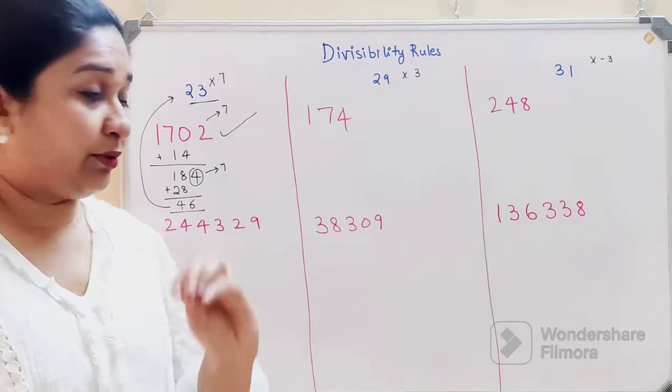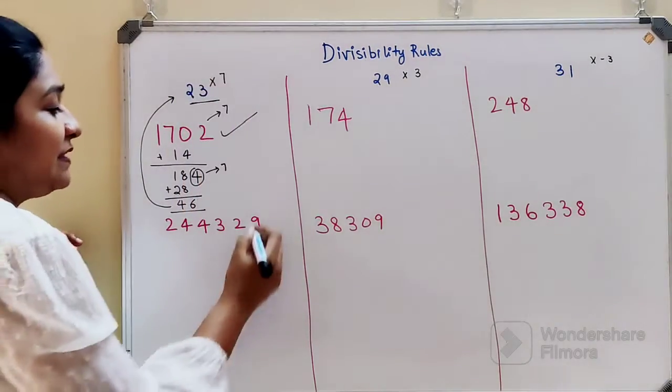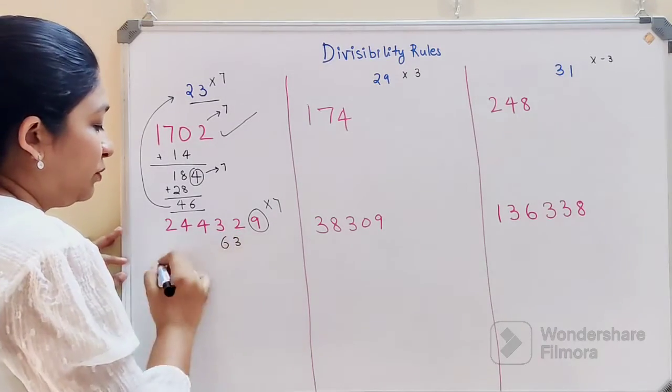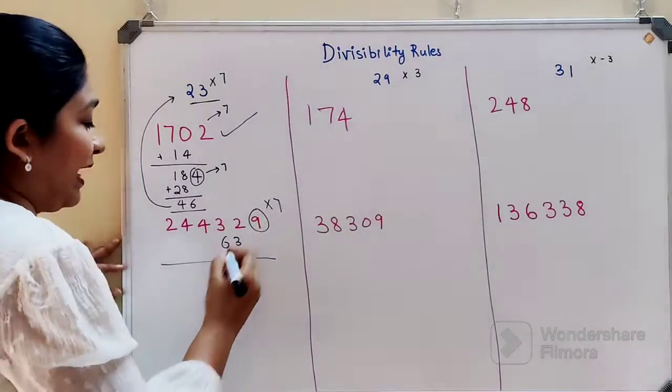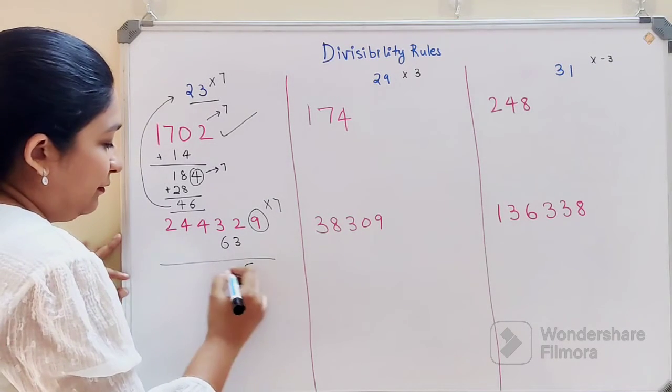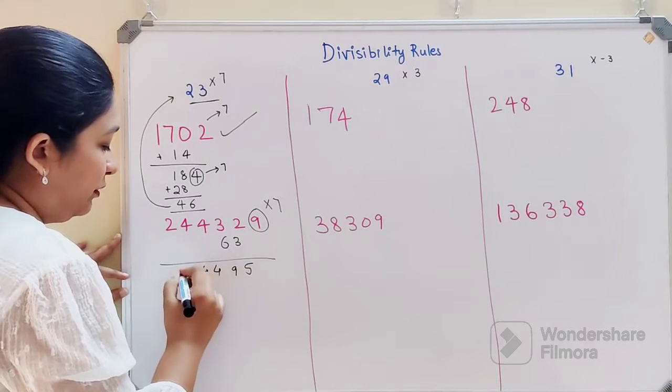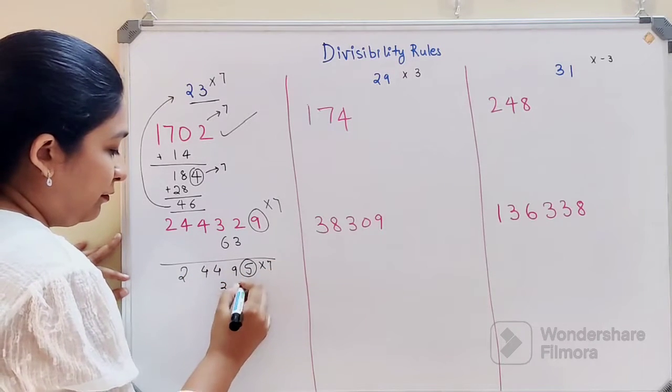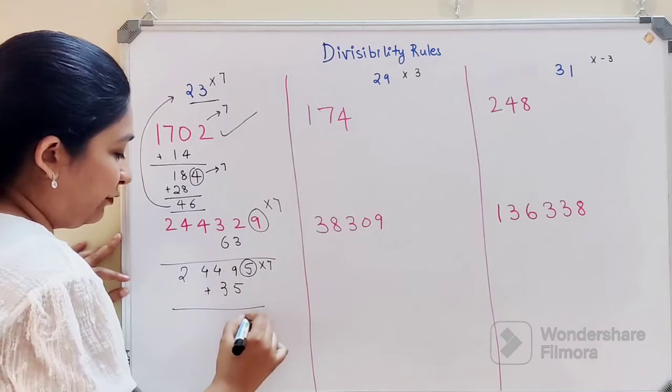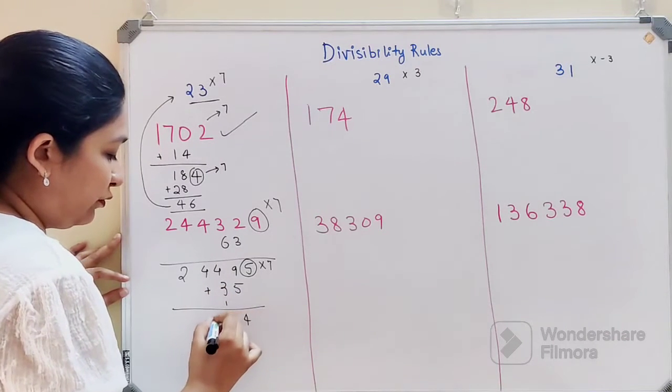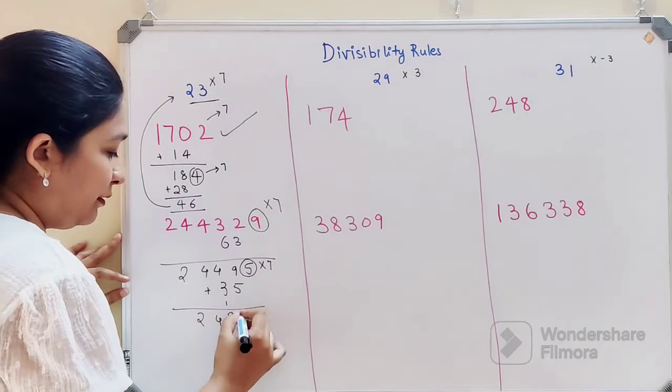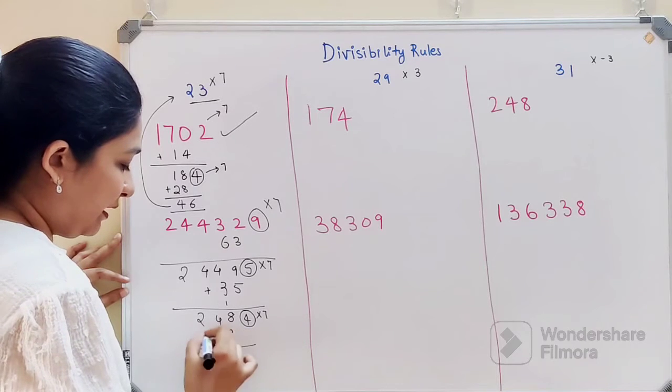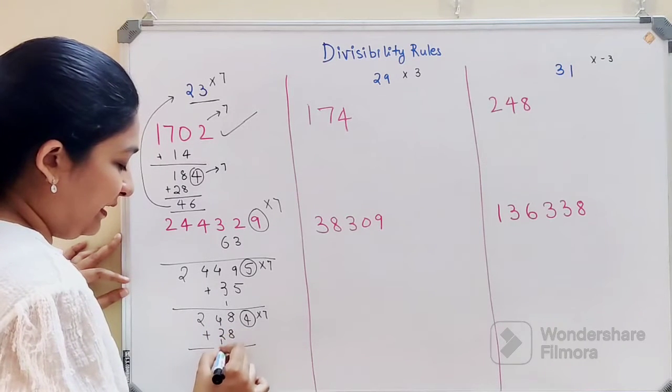Now let's try this bigger example. Multiply 9 by 7 to get 63, add to get 594. Multiply 5 by 7 to get 35, add them to get 14 with carry. Multiply 4 by 7 to get 28, add them to get 16 with carry.